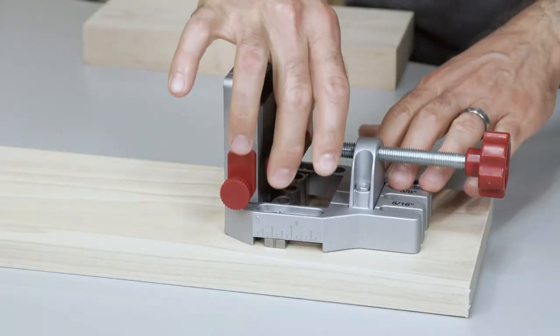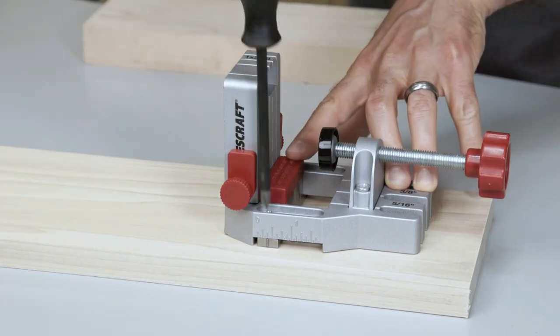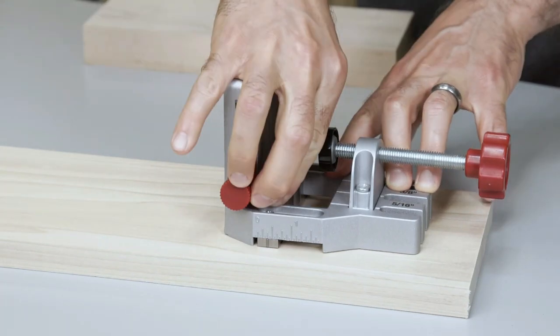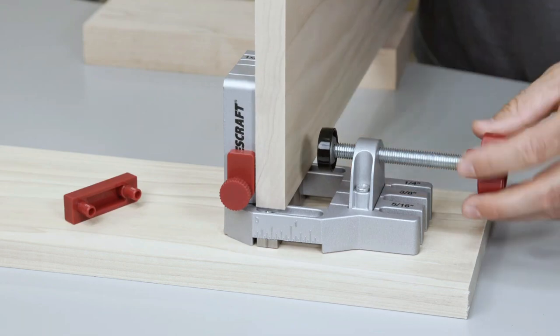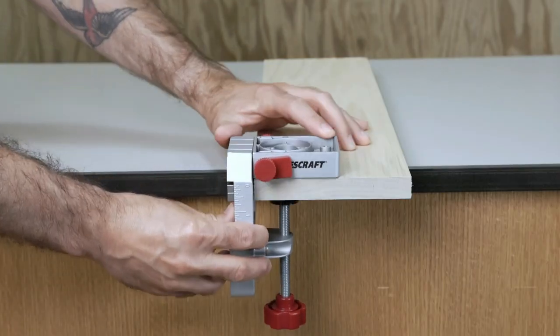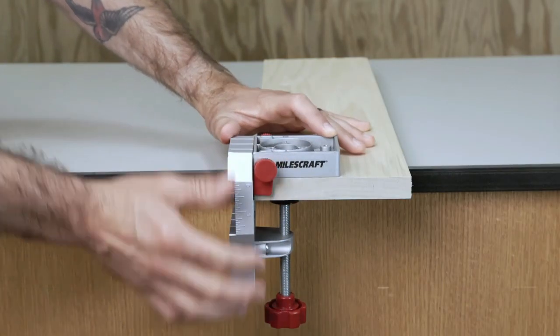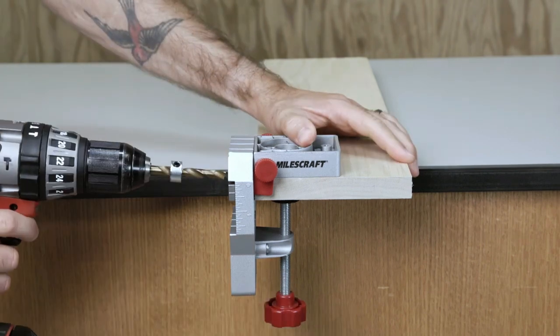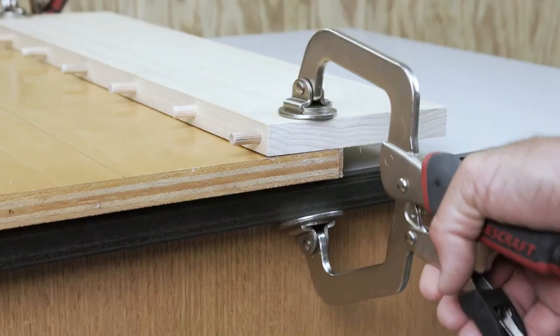The convenient centering marks make sure your holes are where you want them. If you're using standard 1 1/2 inch, 5/8 inch, or 3/4 inch boards, three included spacer blocks will automatically align the drill blocks and help you select the appropriate dowel size.